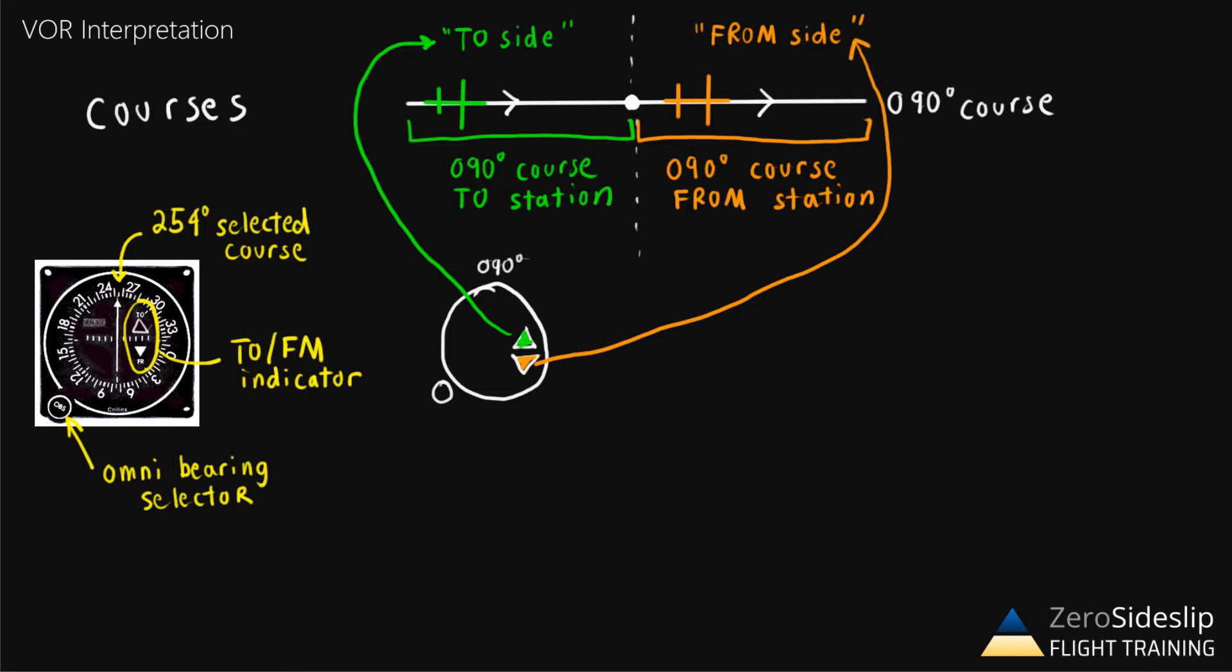Notice that nothing we've talked about so far has anything to do with the heading of the airplane. We're only talking about the position of the aircraft relative to the station, whether we're on the west side of the dashed line or on the east side of the dashed line.